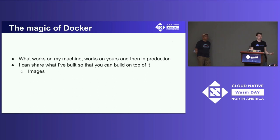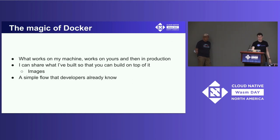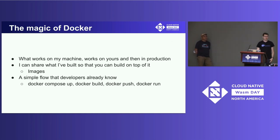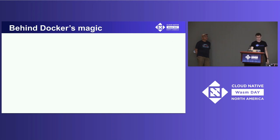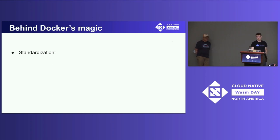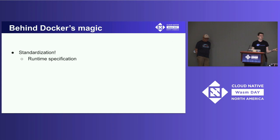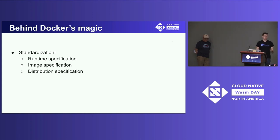The foundation of the container ecosystem is images — the ability to store things in OCI artifacts and consume them directly as a network service or build on top of them. The other magic of Docker is that with millions of developers using it, there's a simple flow developers already know: Docker build, push, compose up. This didn't happen by accident. The core thing behind 'what runs on my machine runs on yours, runs on CI, runs in production' is standardization — the runtime specification, image specification, and distribution specification.